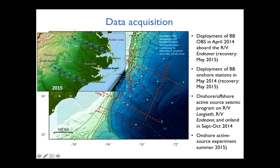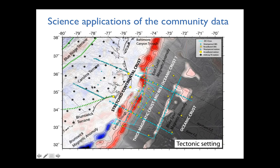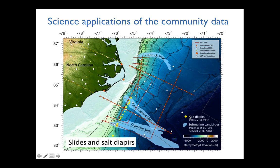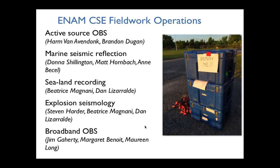These data spans not just the crustal scale — we also acquired high-resolution seismic reflection data across shallow structures like landslides and salt diapirs. This is a data set that can be used by a variety of scientists for a variety of applications. In case you are interested, the data is available to the community, and the people responsible for each acquisition component are listed and free to be contacted.